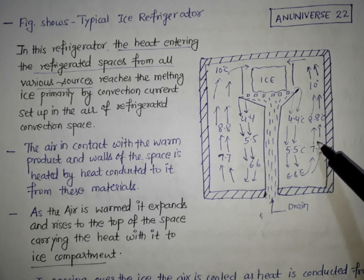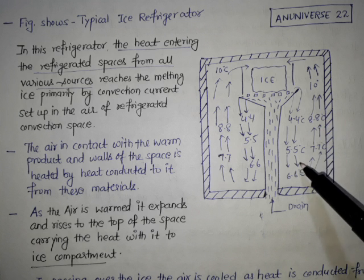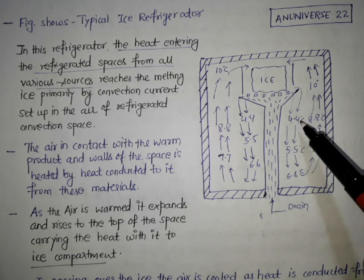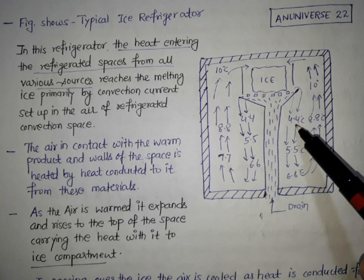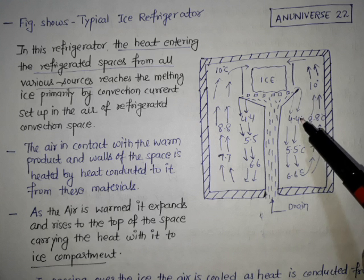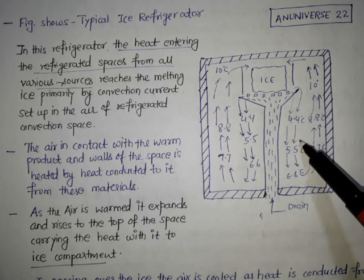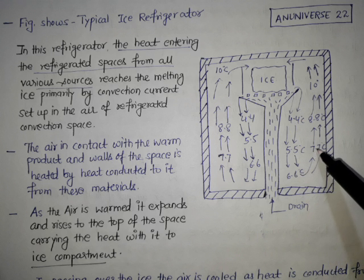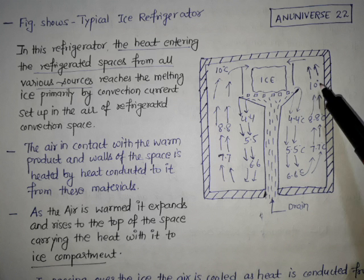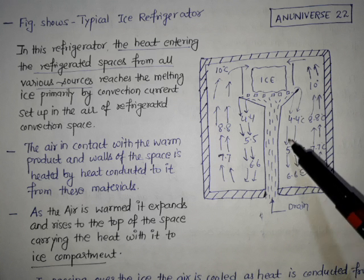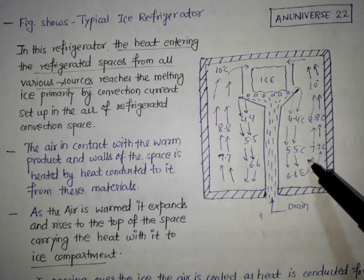By absorbing the heat, it becomes warm and warm air is light compared to cold air. So it is moving and temperature difference we can see. At the beginning, it is 4.4, then 5.6, 6.6, 7.6, 8.6, and at the last, it is 10 degrees Celsius. This is the temperature variation we can see in ice refrigeration.